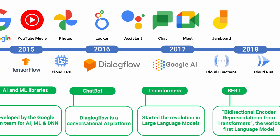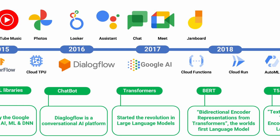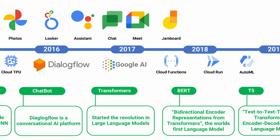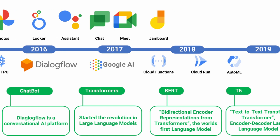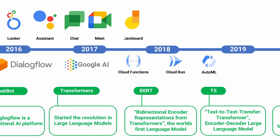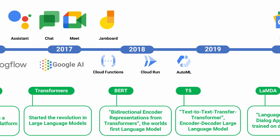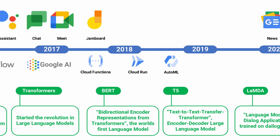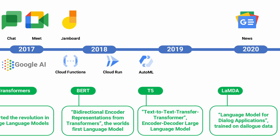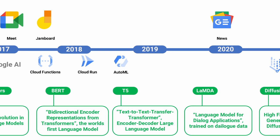It was in 2017 that the revolution really started in large language models when Google published its Transformers paper. In 2018 we have BERT, the Bidirectional Encoder Representations from Transformers, which was the world's first language model. We then have T5, the Text-to-Text Transfer Transformer, which is an encoder-decoder large language model.